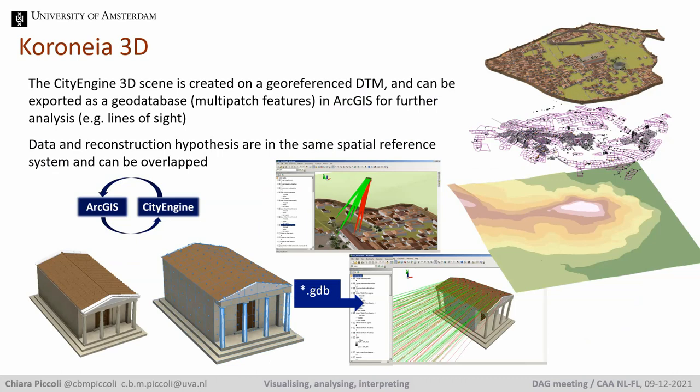Koronia's 3D scene in CityEngine is georeferenced and can be exported as multi-patch features in a geodatabase and imported into our GIS. Given that data and reconstruction hypotheses are in the same spatial reference system, they can be overlapped and compared. Integration with GIS allows for further analysis, for example visibility analysis of a building from a specific point of view.